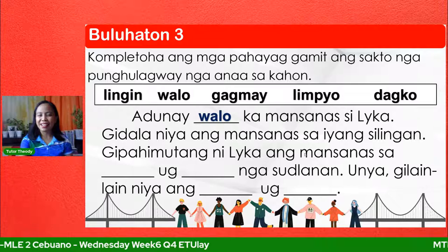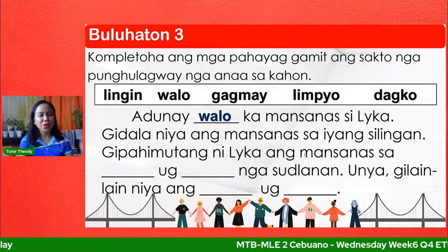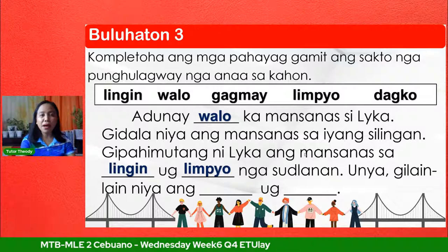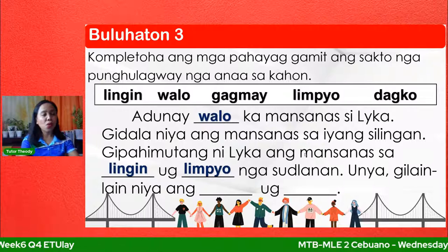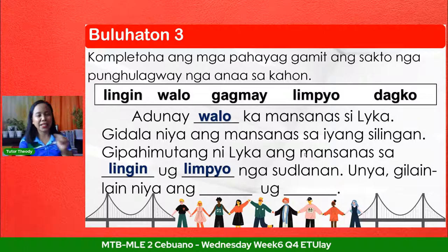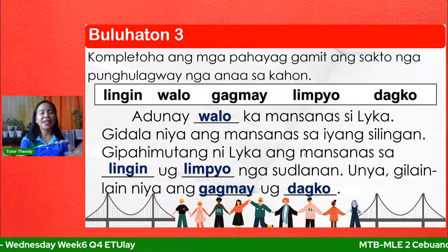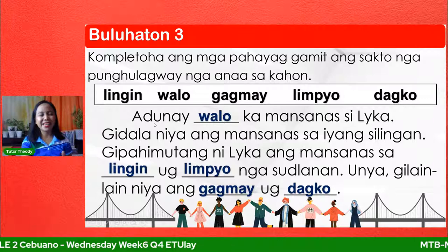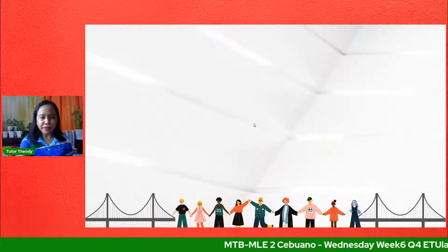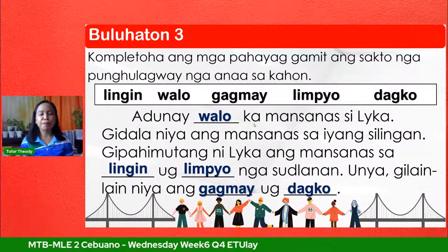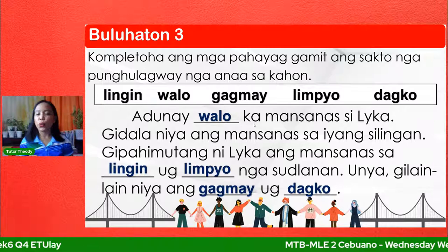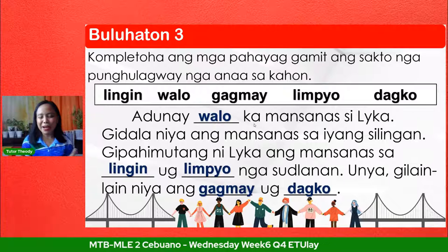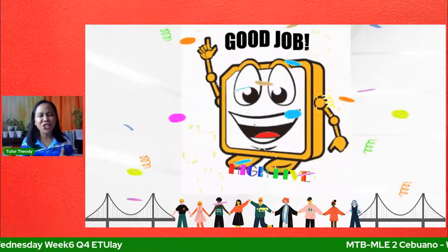Atong tanawan ang inyong mga tubag. Una: adonay walo kamansanas si Laika — ang punghulagway sa unang pahayag kay walo. Sa sunod: lingin o limpio — pwede rapot mabali, pwede mauna ang limpio din lingin ang sunod. O sa ikapat o ikalima nga blank: gagmay o daggo — pwede pon daggo o gagmay. Atong basahong taroon ang pahayag nga adunay mga punghulagway: adonay walo kamansanas si Laika. Kidala niya ang mansanas sa iyang silingan. Kipahimutang ni Laika ang mansanas sa lingin o limpio ng asulanan. Unya kilainlain niya ang gagmay o klanko. Sa mga nakakuha sa insaktong tuba, congratulations! Good job ninyong tanan! High five!